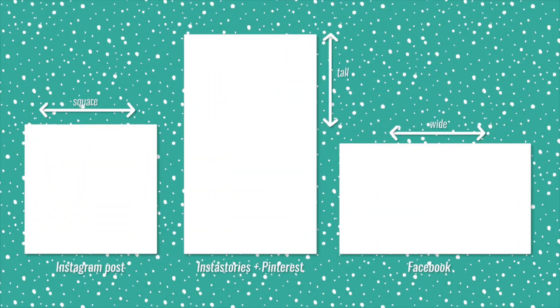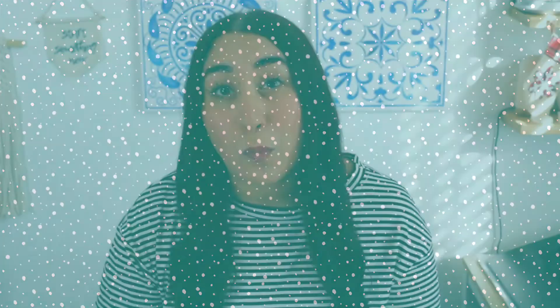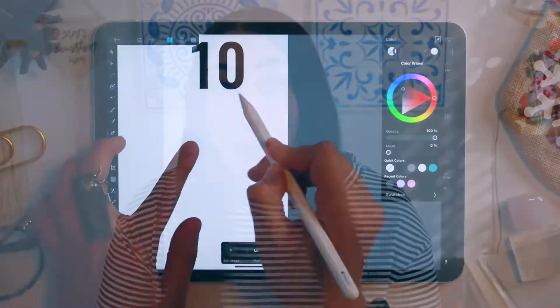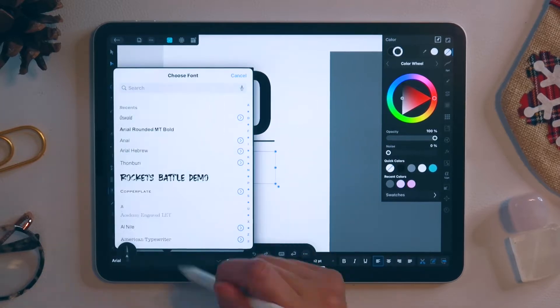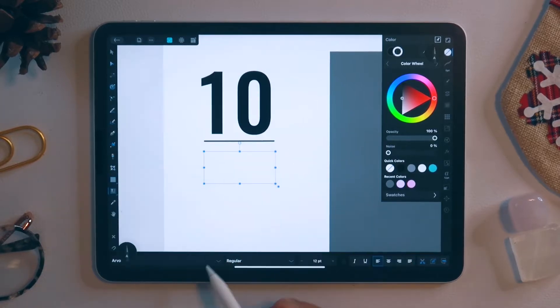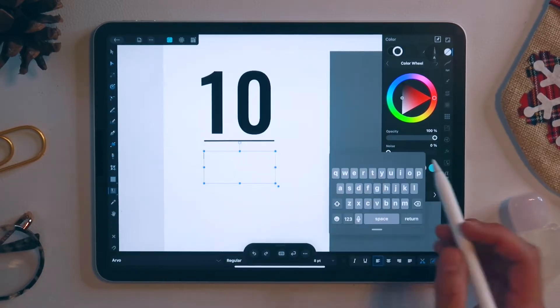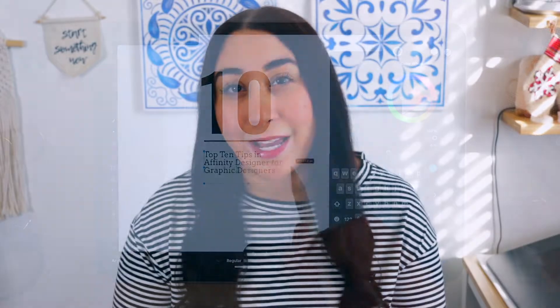Instagram's default is square, but they also have Instagram Stories, which is tall, and Facebook loves horizontal images, and Pinterest graphics will perform best if they are taller than they are wide. The easiest way I have found to keep up with it all is to basically create templates for each platform and use those templates to help me plan out post themes, color themes, and content.